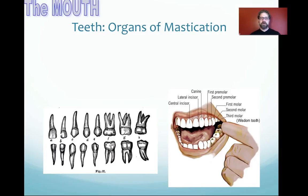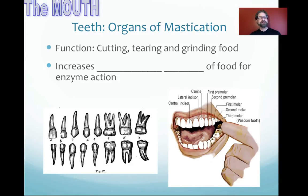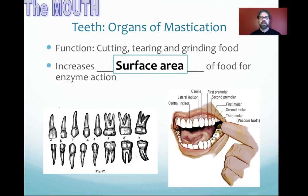Our official starting point is the mouth. Teeth are organs of mastication — chewing. Their function is cutting, tearing, and grinding food. This is important because breaking food down increases surface area, greatly enhancing the chance that an enzyme will hit a particular spot on that piece of food and break it down further. In total, we have 32 teeth — 16 on top and 16 on the bottom.